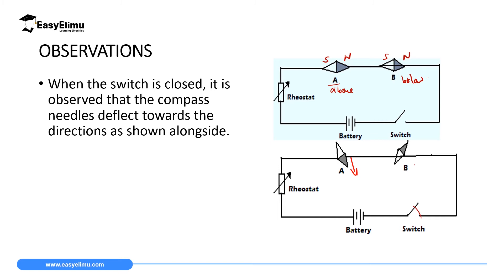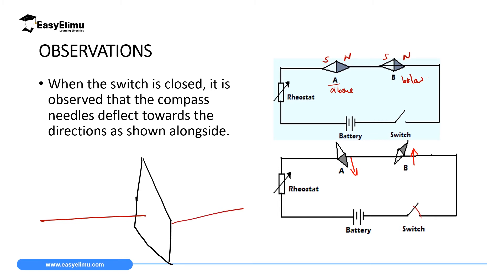And then the one which is below will deflect upward like that. So if I can draw an elaborate diagram, assuming that the wire was passing on a cardboard like this one here, where this wire is coming from one side and then moving to the other side of this cardboard.